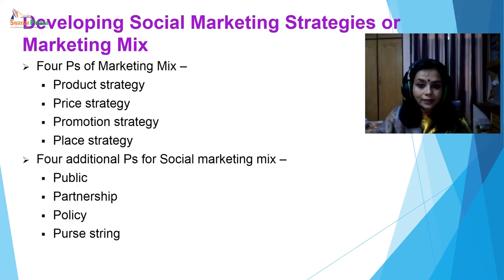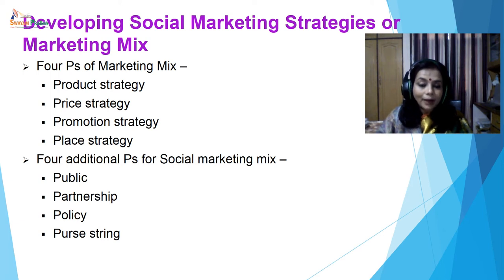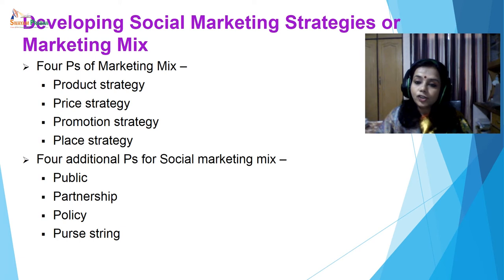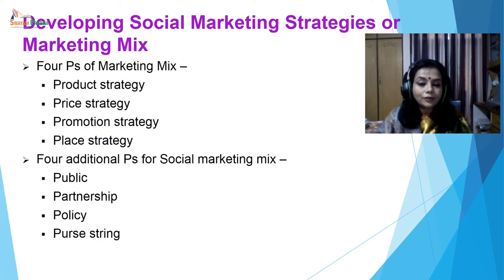Developing social marketing strategies or marketing mix: There are eight P's of marketing mix in social marketing — the four traditional ones and four additional ones. The traditional P's are product, price, promotion and place, and the additional P's for social marketing are public, partnership, policy and purse string. We will discuss each of these P's in detail in the next few slides.